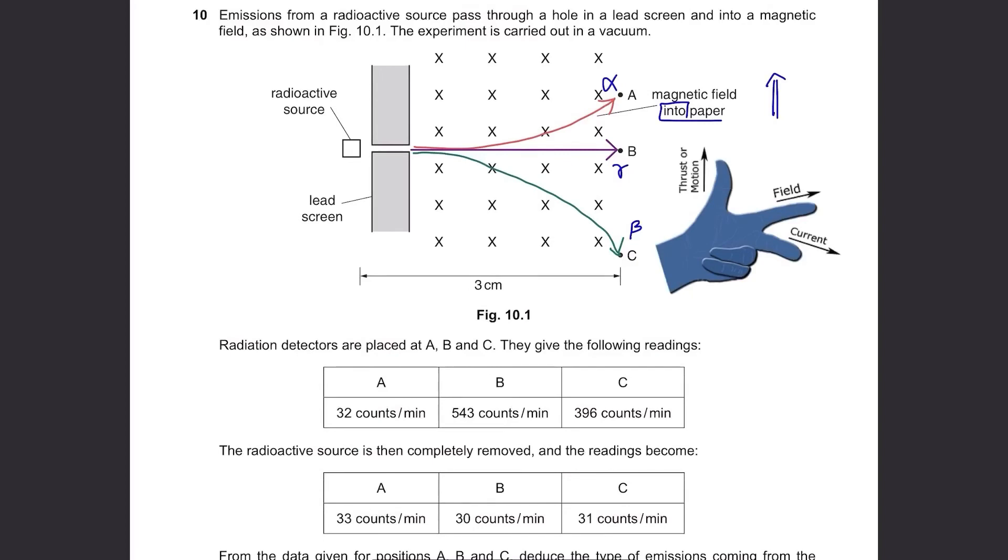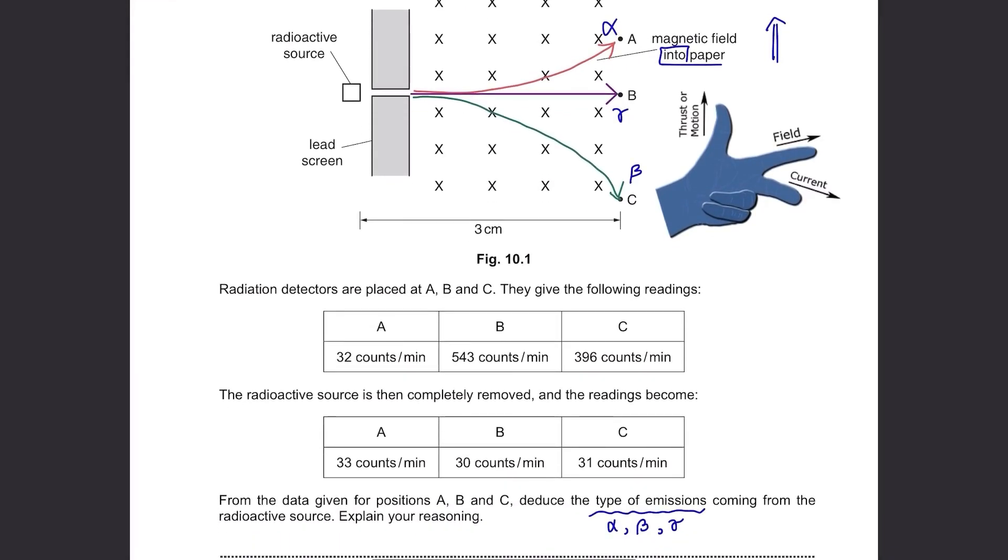Let's then compare the two tables given here. The rating when the radiation detectors are placed is very low compared to the other two, and there is almost no change in A even when the radioactive source has been removed. Meaning no alpha particles have reached A from the beginning and no alpha particles have been emitted from the source. For B, we see a significant change in the ratings when the radioactive source has been removed. So gamma ray has been detected. Also for C, we see a big difference when the radioactive source has been removed. Then again, beta particles have been detected.